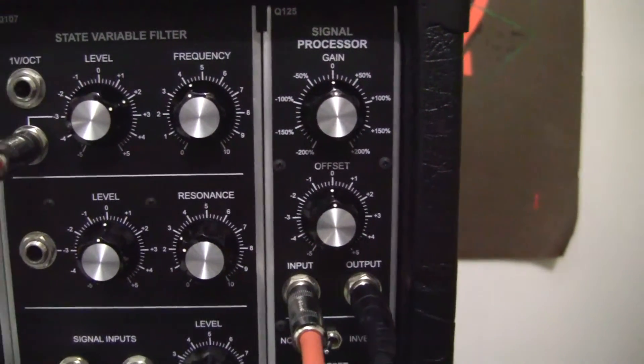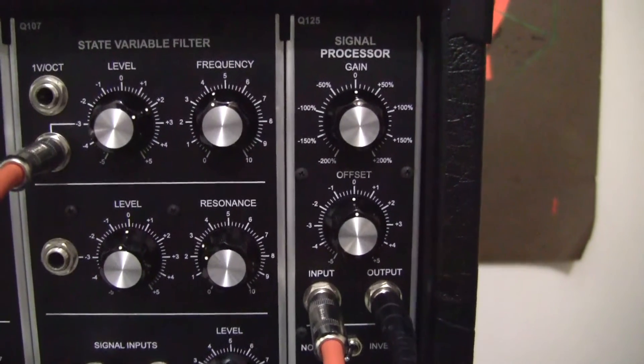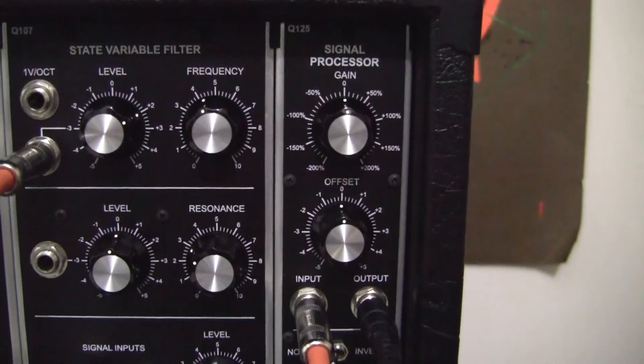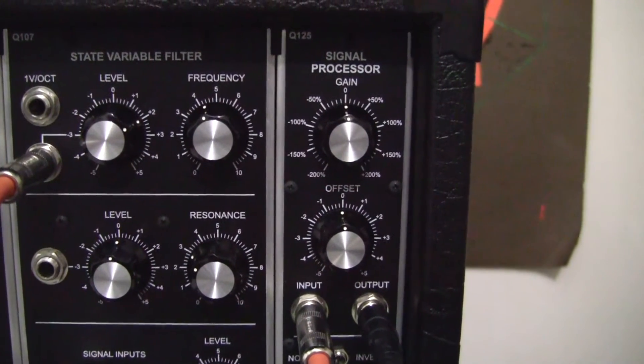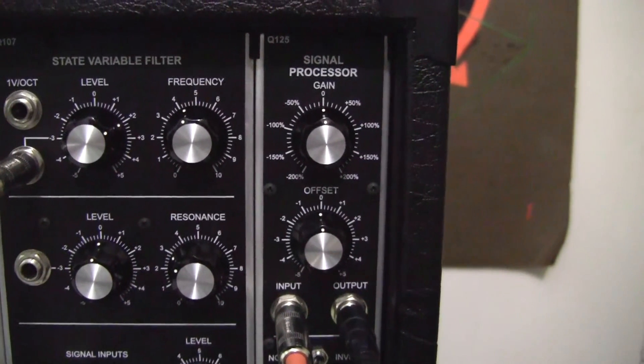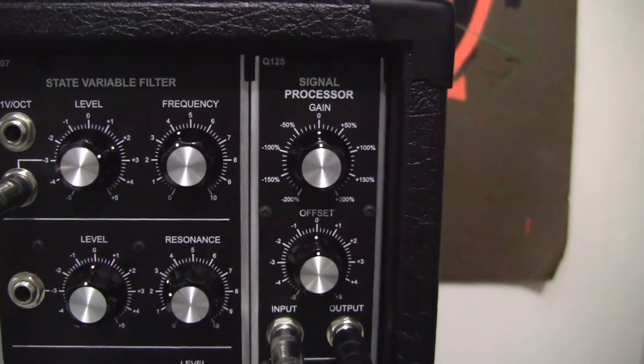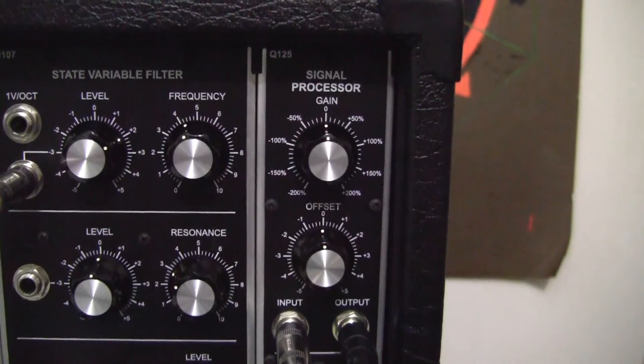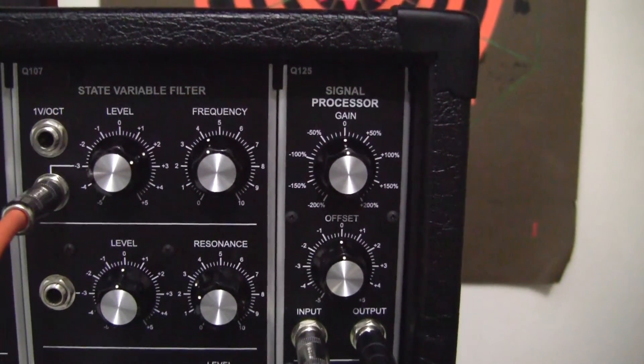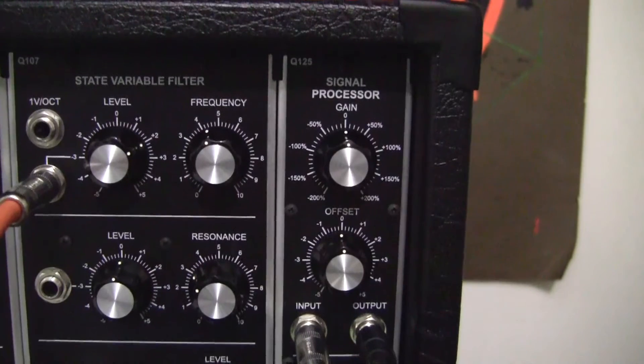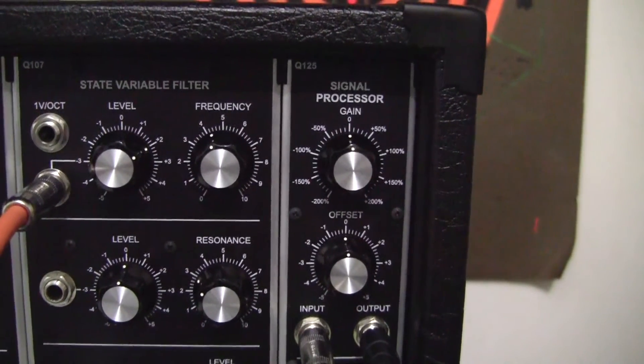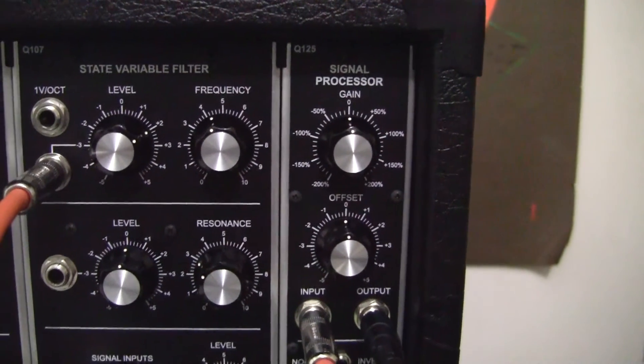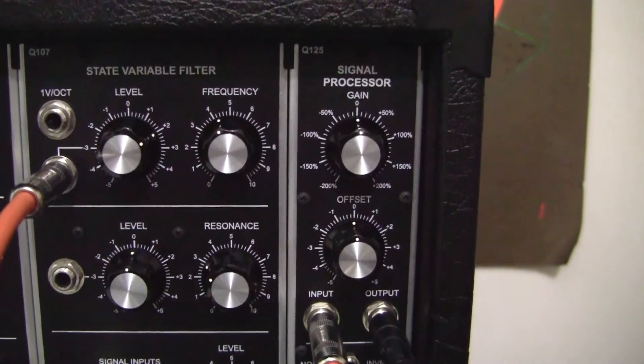If we shift it up using our offset control which can raise it or lower it by 5 volts, that's going to add another 5 volts to that 10 volts. So the possibility would seem to indicate that we could have a maximum output from the signal processor of 15 volts either positive or negative depending on how we set our controls.